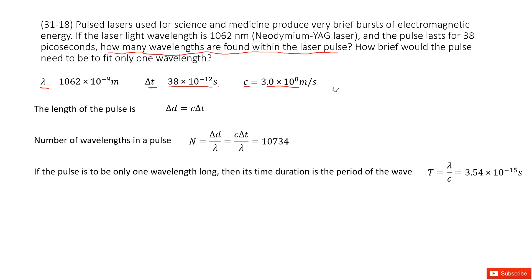First, we need to find the length of a pulse. Then we know how many wavelengths we have, right? This is the length of a wavelength, lambda.